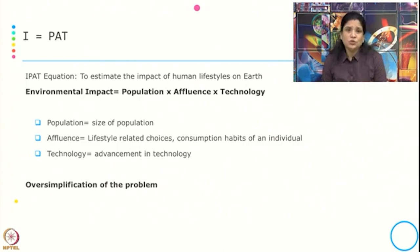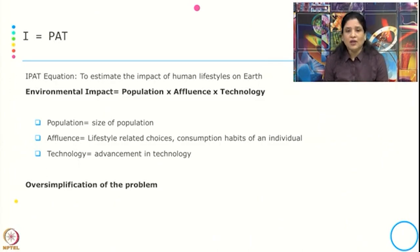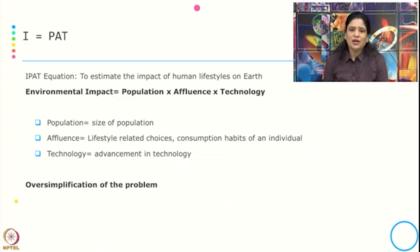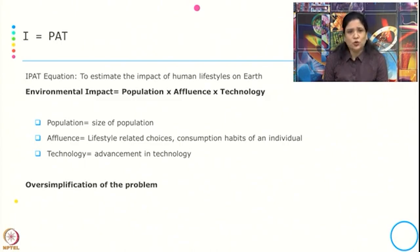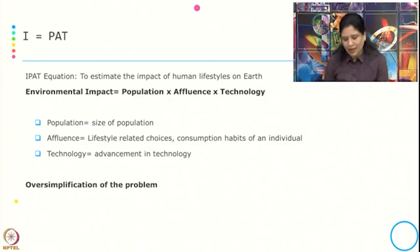The IPAT equation is used to estimate the impact of human lifestyle on earth. Population gives us the size of population; affluence represents lifestyle-related choices, mostly the consumption habits of an individual guided by how much the individual earns or their income; and technology represents the advancement in technology. Critics of this model find that the impact or problem is oversimplified through this IPAT equation.